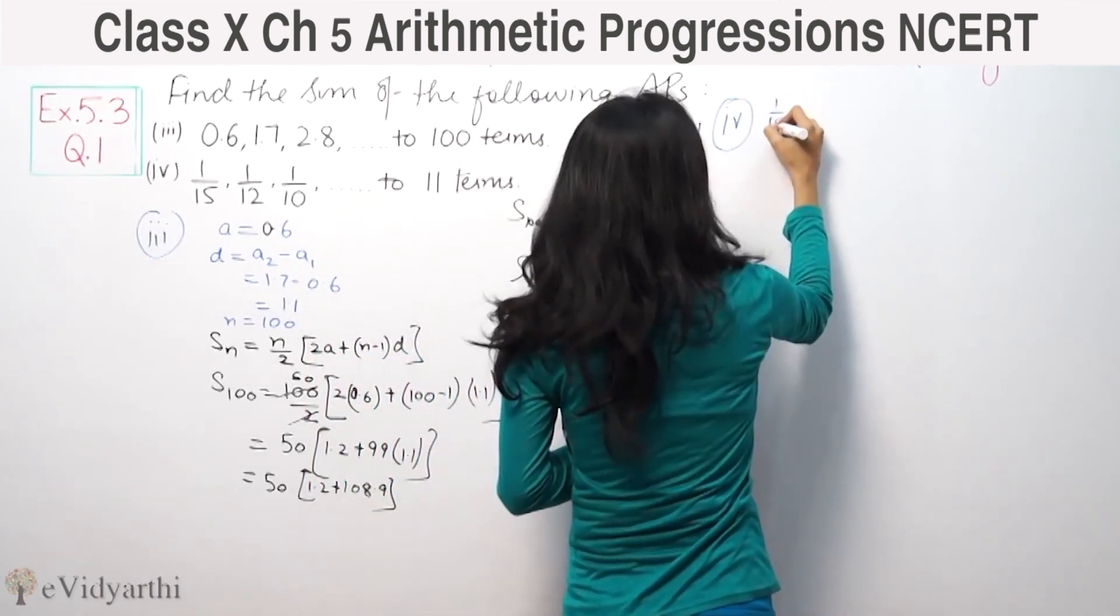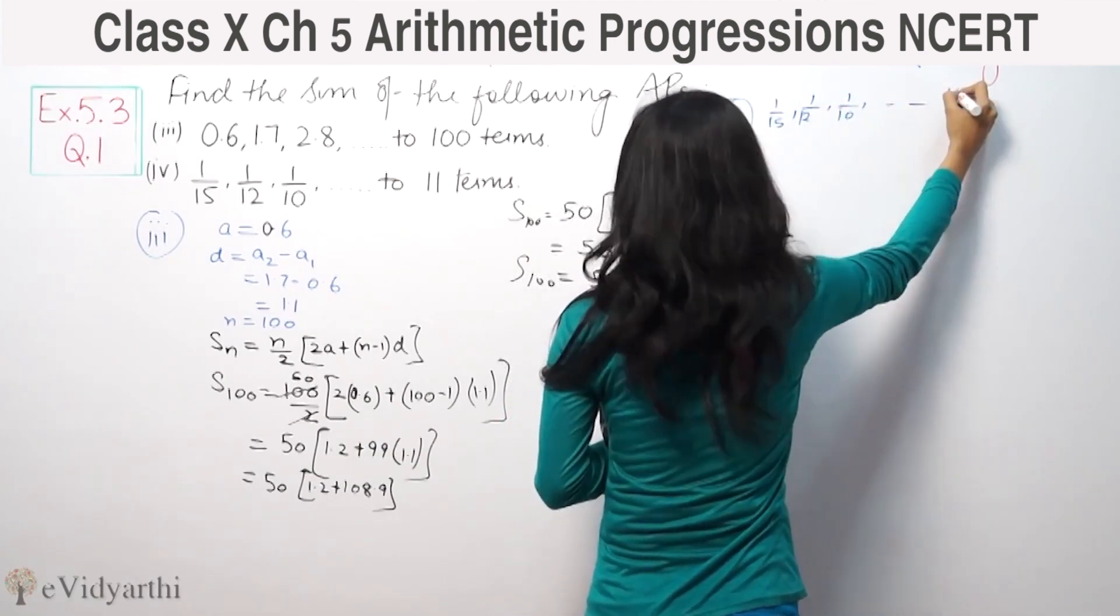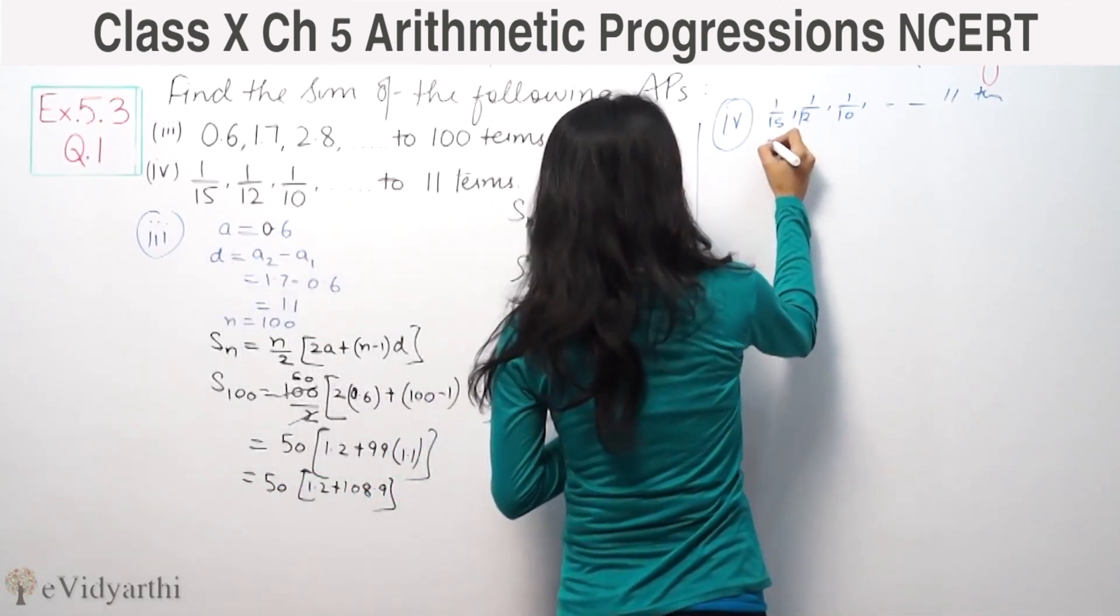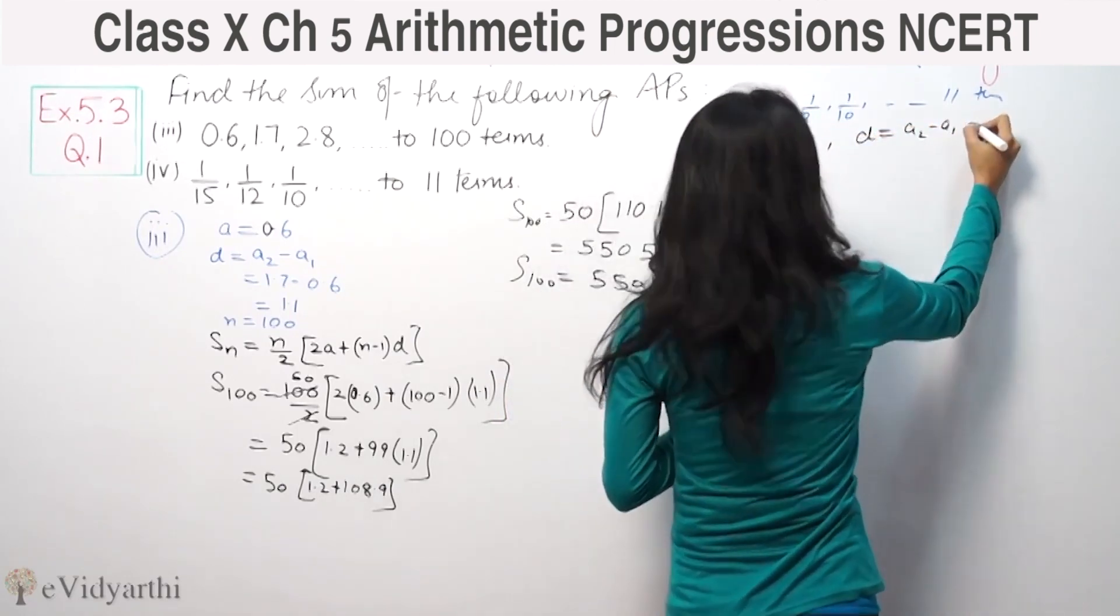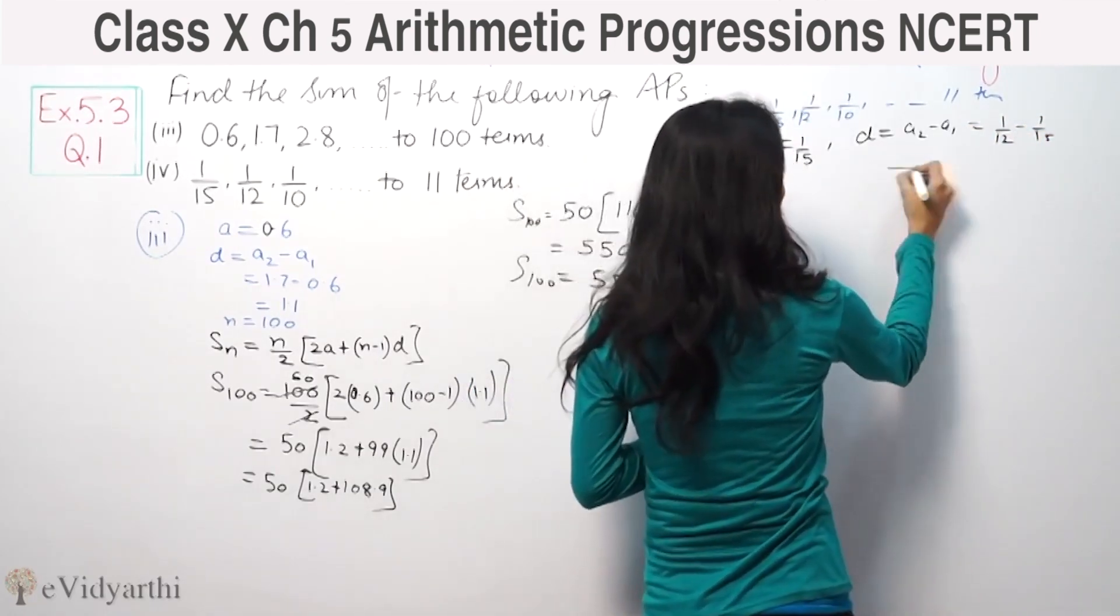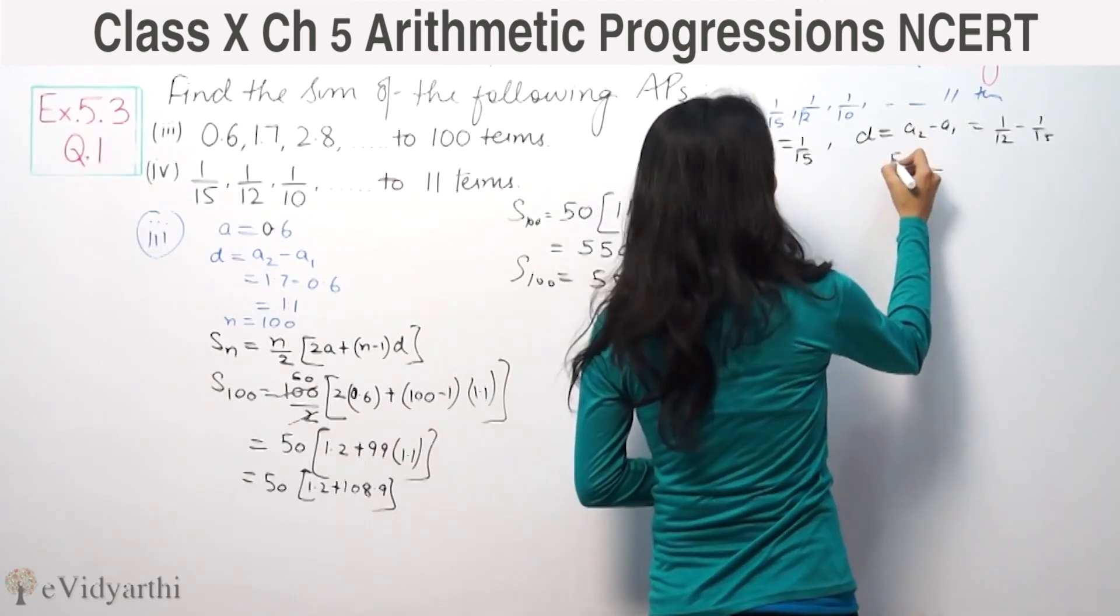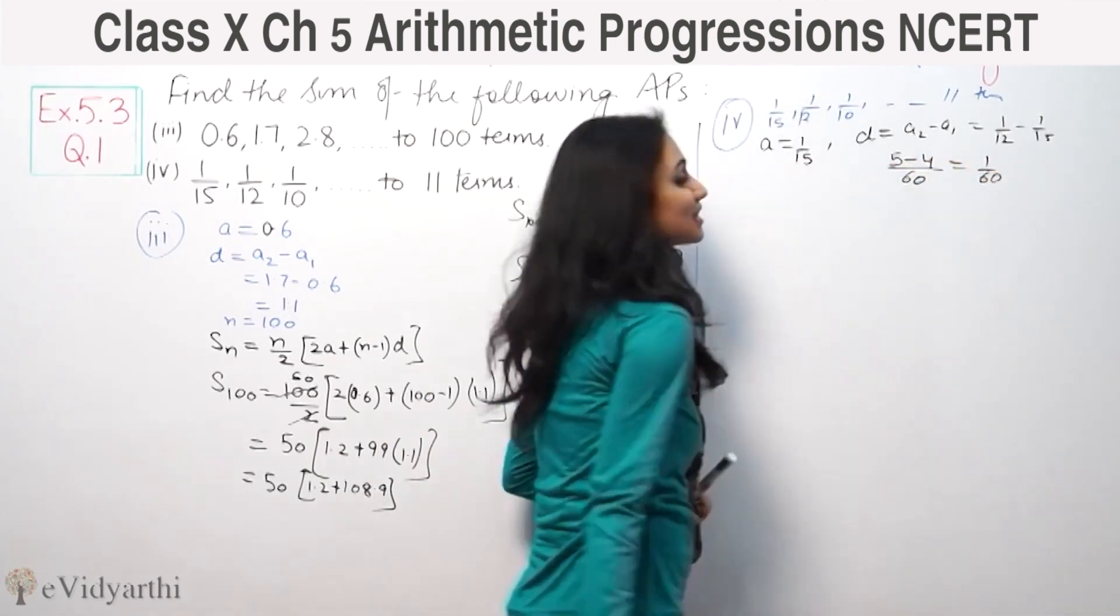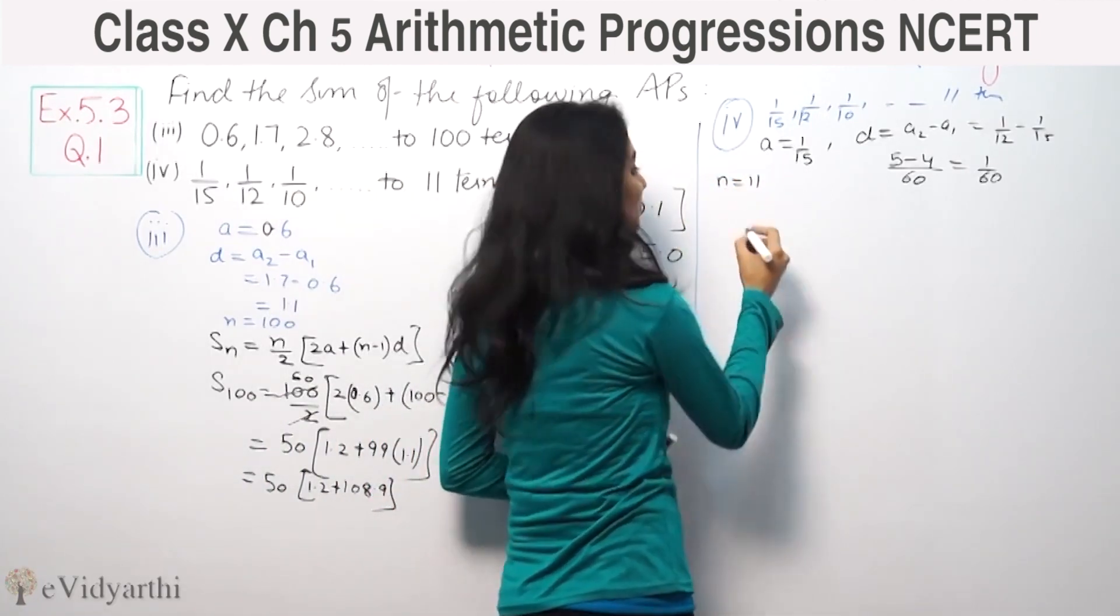This is 1 by 15, 1 by 12, 1 by 10, 11 terms. First term is 1 by 15. Common difference is A2 minus A1, that means 1 by 12 minus 1 by 15. LCM is 60, so 5 minus 4, which is 1 by 60. N is 11.